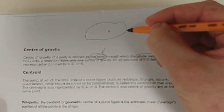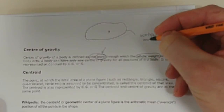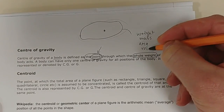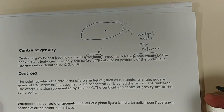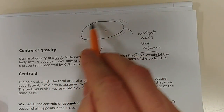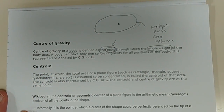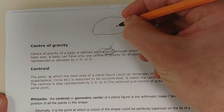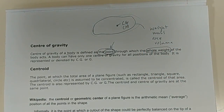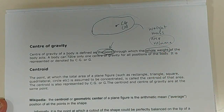So this whole body has a total weight, total mass, total area, or volume — whatever you want. There's a point on the body through which the whole weight acts, and that is called your center of gravity or center of mass. The centroid refers to area and volume, which we'll get to in a minute.